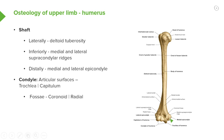Most distally, the humerus dilates into two condyles that form the articular surfaces articulating with the radius and the ulna to create the elbow joint. There are two articular surfaces: the trochlea, medially, and the capitulum, laterally. The radius articulates with the capitulum, and the ulna articulates with the trochlea of the humerus.